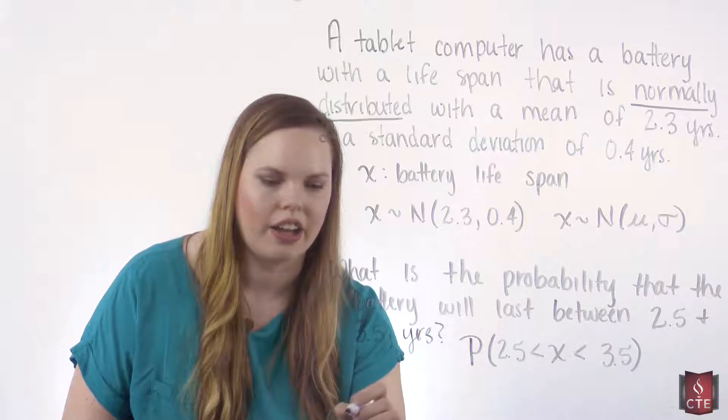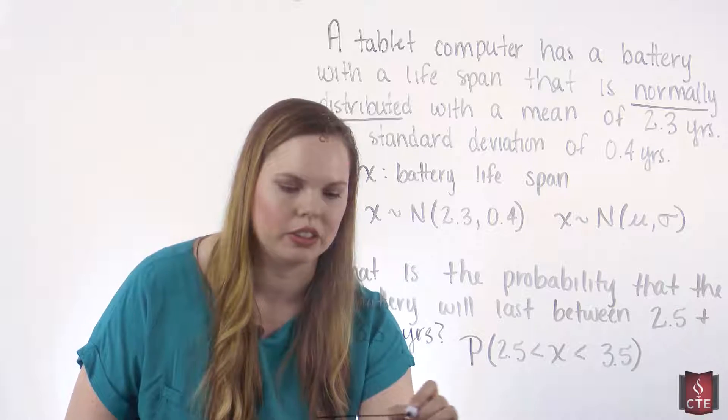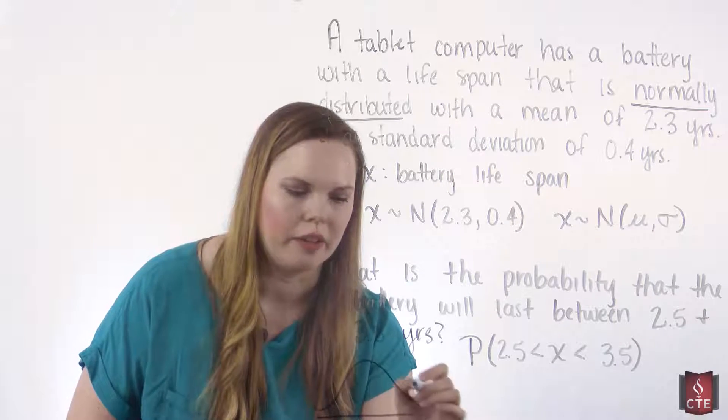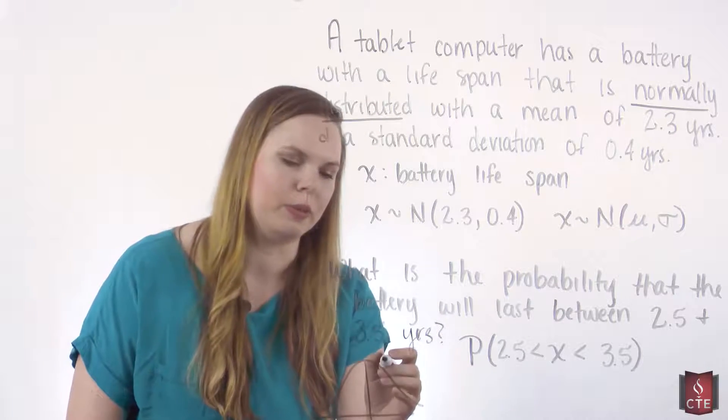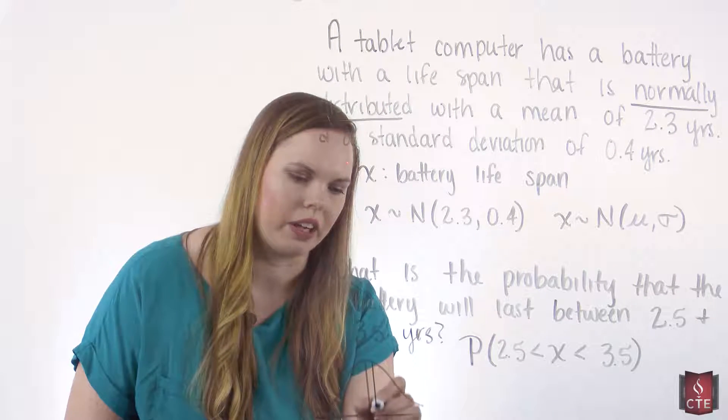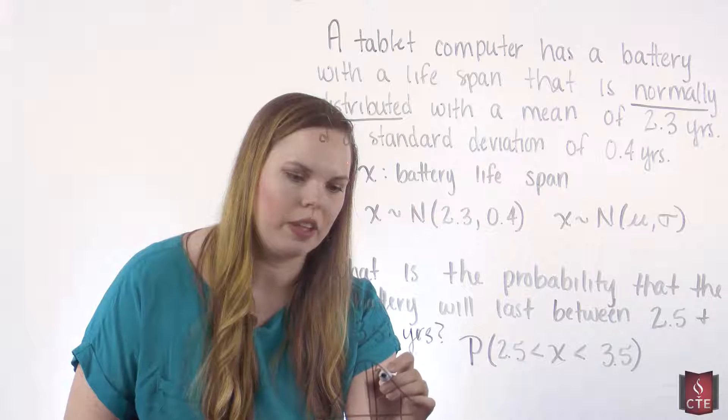If you want to kind of sketch that out on a normal distribution graph, I'm going to draw it real small right here. We have our mean right here in this case of 2.3. So between 2.5 and 3.5, we're kind of right here, and we're looking for the between.